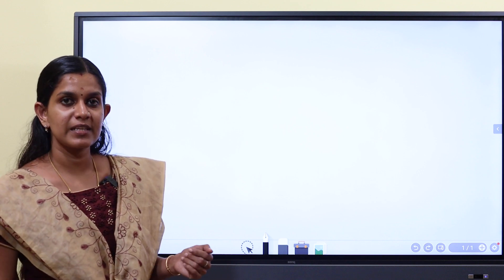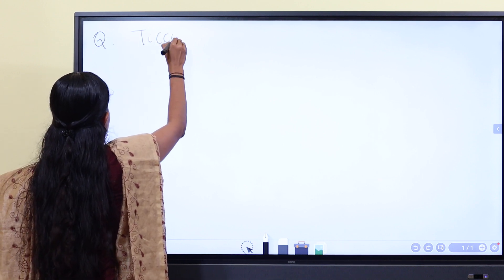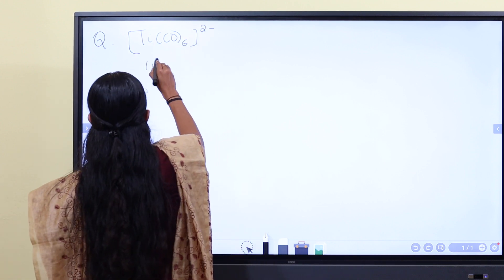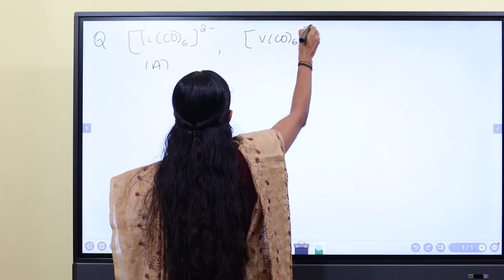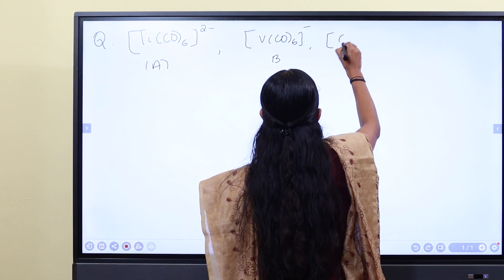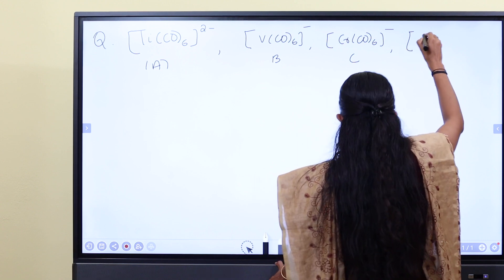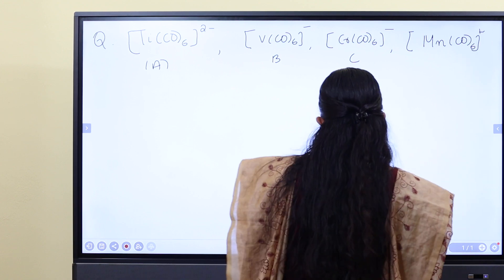We will do one or two questions. The first question involves comparing the CO stretching frequency of isoelectronic species: TiCO6(2-), VCO6(-), CrCO6, and MnCO6(+).